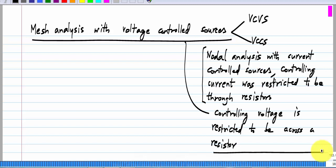That is the same reason why we restricted the controlling current in nodal analysis to be only across a resistor. If the controlling voltage is across a resistor, clearly it can be written in terms of the current control sources, so it can be treated analogously to current-controlled sources. That is why we introduced this simplification.